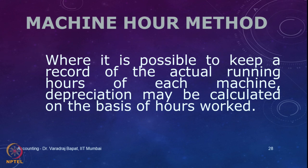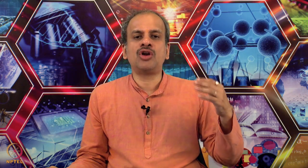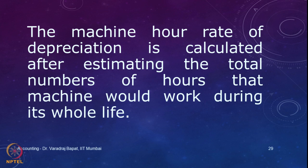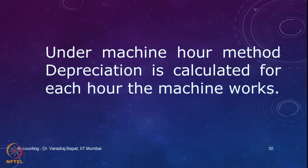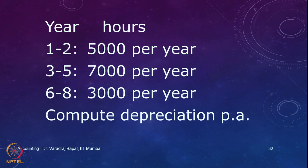Let us go to the third method — the machine hour method. For certain machines the life depends on how many hours you use the machine, so depreciation is calculated based on the likely life expressed in working hours. For example, if the cost of machine is 5 lakhs, estimated working hours are 40,000, and scrap value is 10,000, and the pattern of effective working hours is: years 1–2 at 5,000, years 3–5 at 7,000.